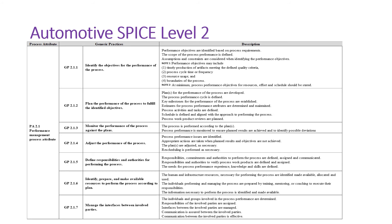Looking at PA 2.1 in detail: GP 2.1.1 is talking about identifying the objective for the performance of the process — we need to identify the goal value or the objective of the process.